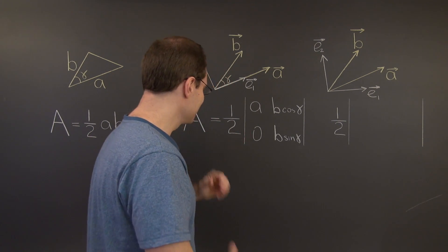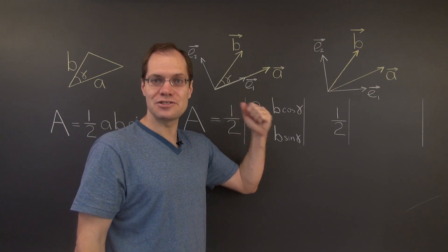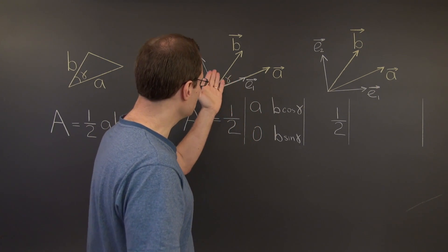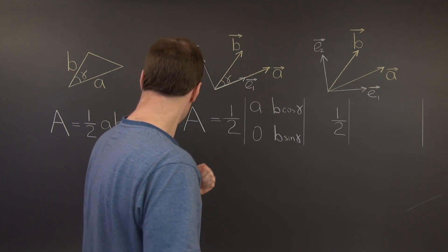Because the determinant gives us the signed area of the parallelogram built on A and B, and the area of the triangle is half the area of that parallelogram. So that explains the one half. And so the calculation, as I promised, is trivial because our choice of basis was particularly smart.